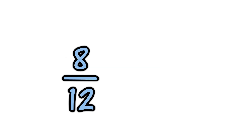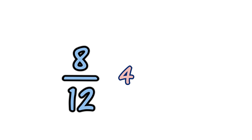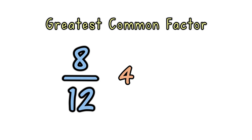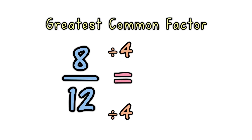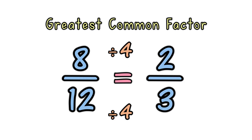simplify the fraction 8 over 12. The largest number that goes exactly into both 8 and 12 is 4, so the greatest common factor is 4. Divide both top and bottom by 4, and the answer is 2 thirds.